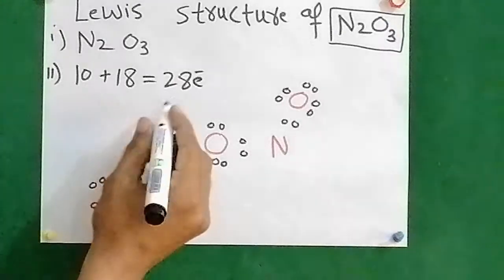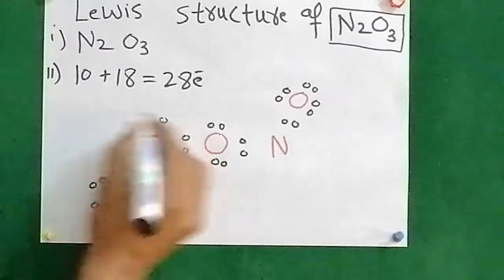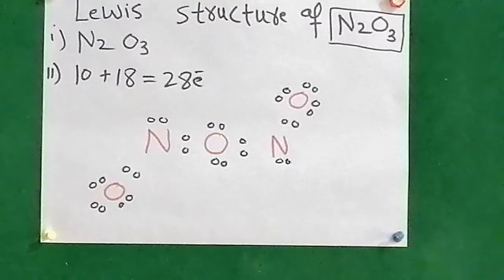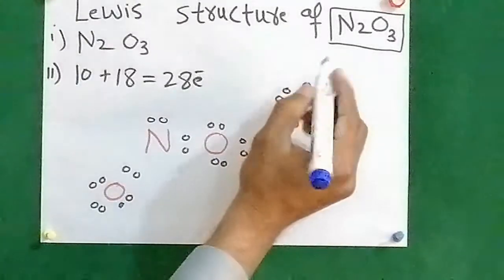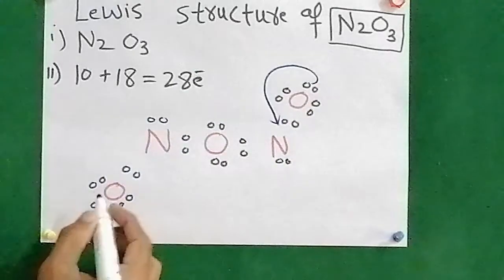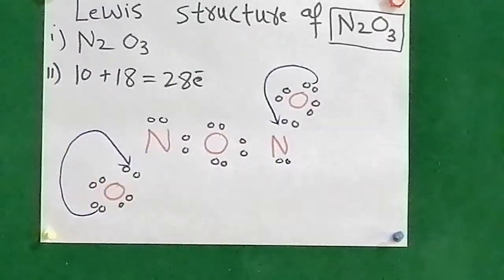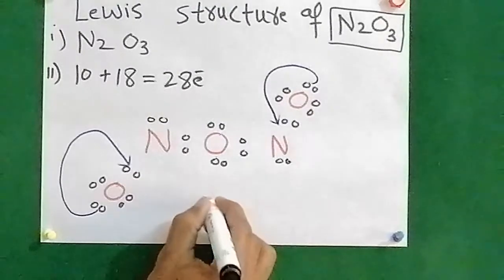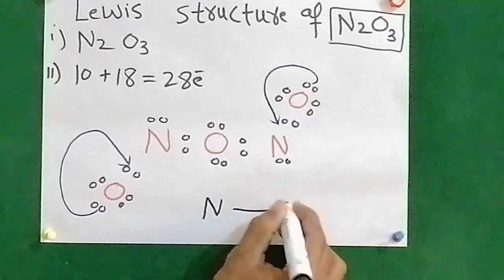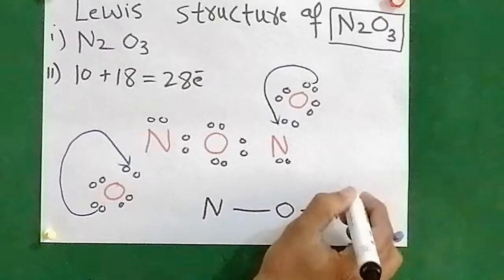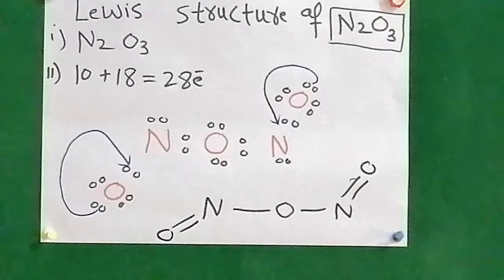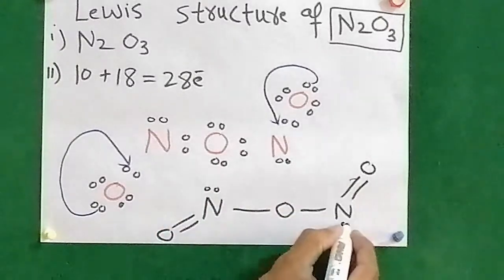Now, put two electrons here and two electrons on nitrogen. And if we transfer this pair of electrons between nitrogen and oxygen, and this pair of electrons between nitrogen and oxygen, then the structure becomes: nitrogen, oxygen, nitrogen with a double bond to oxygen and a double bond to oxygen, and nitrogen has a lone pair of electrons.